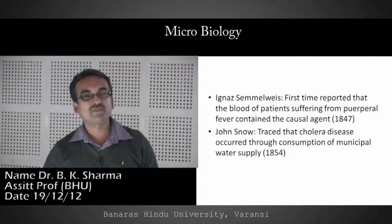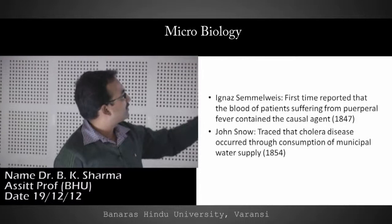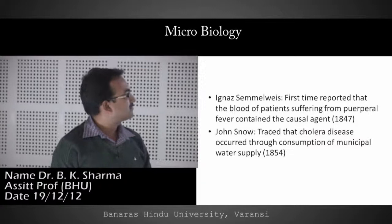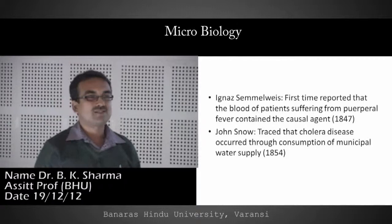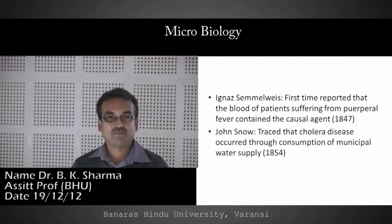Then in 1854, John Snow said that cholera disease mostly affected people who had consumed the municipal water supply, meaning the cause of cholera was present in the municipal water sources. This was again a very strong association of microbes with a specific cause of disease.